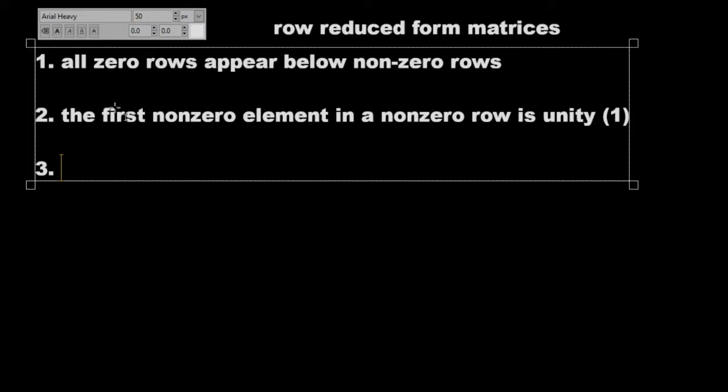Two more rules. The third rule: all elements directly below, that is in the same column but lower down on the matrix, of the first non-zero element in a non-zero row are zero. All elements below the first non-zero are zero.